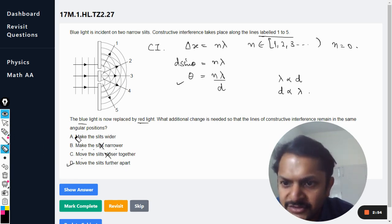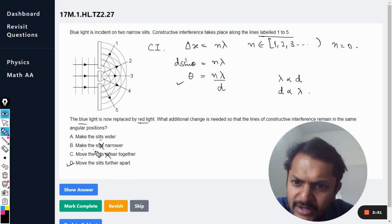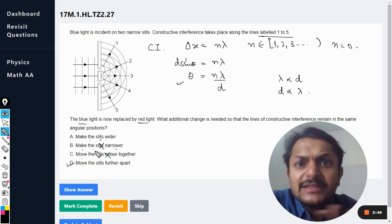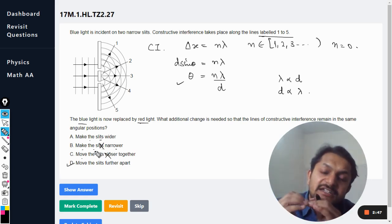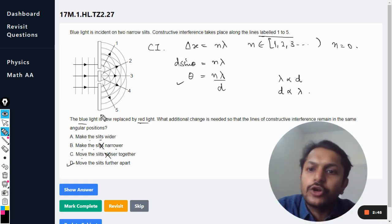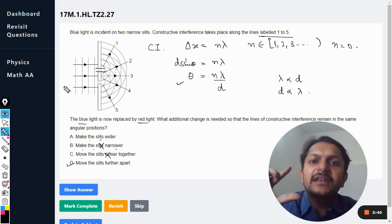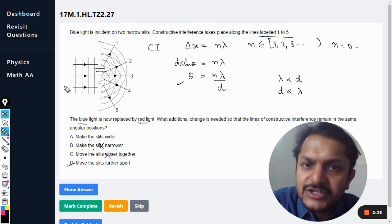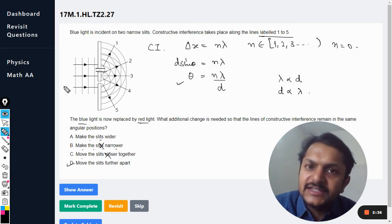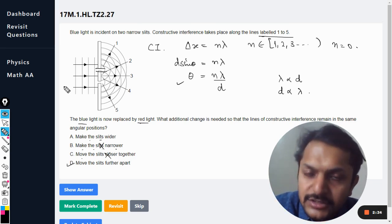D should be the correct answer, not A. Make the slits wider, okay, we are not going to make the slits wider. If the slit size is increasing, like we are talking about the size of the slit, the size of the slit, then the intensity of the central maxima intensities will increase, but the angles will not, okay.